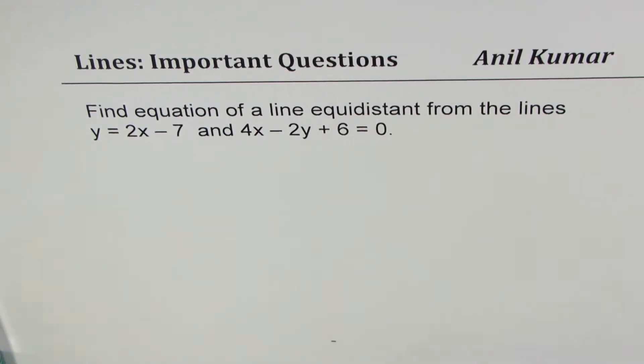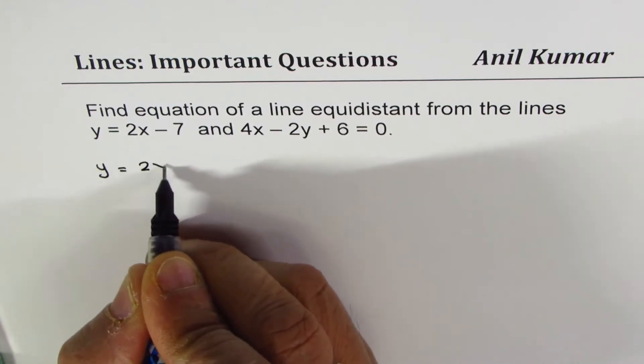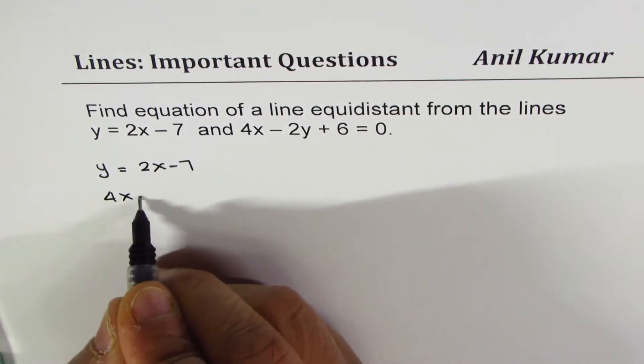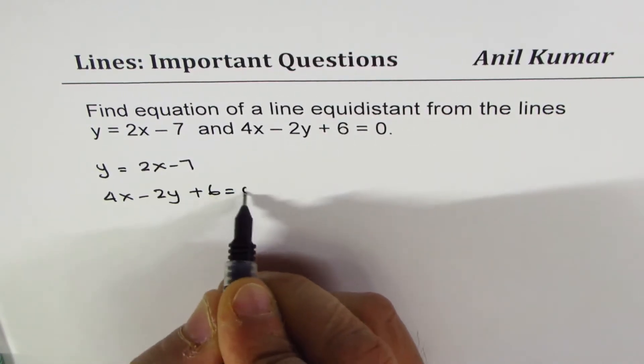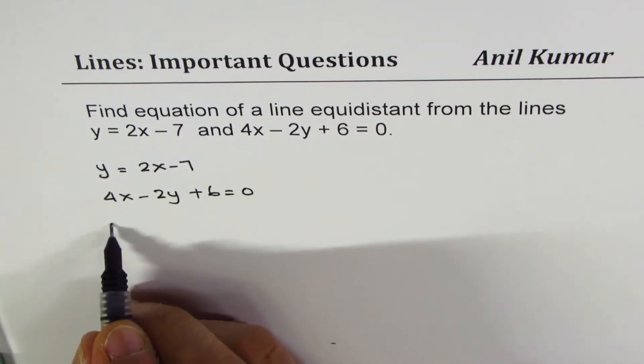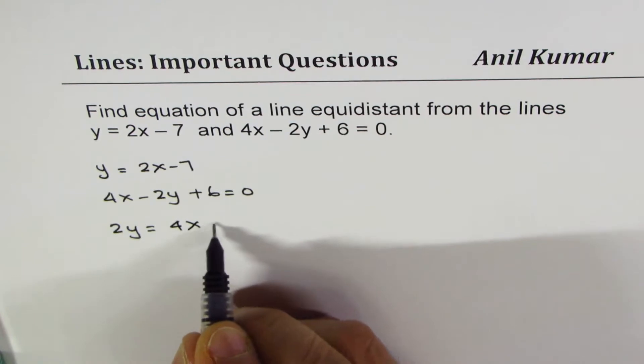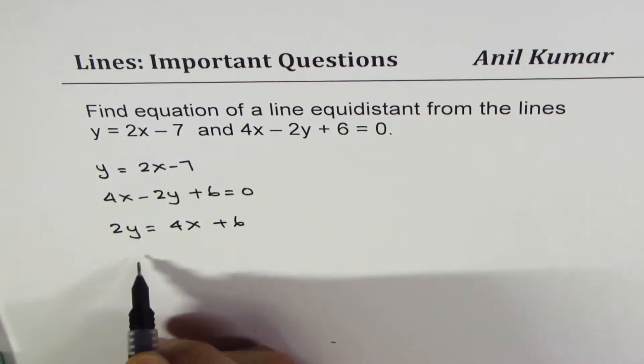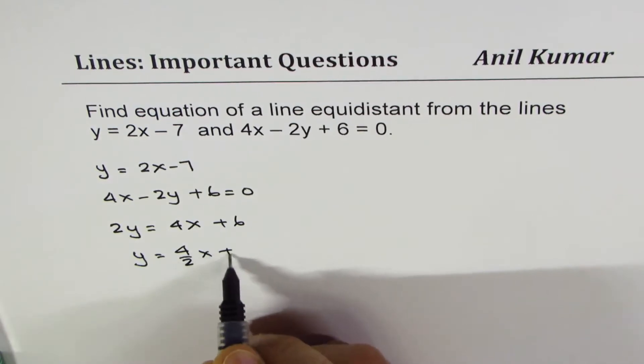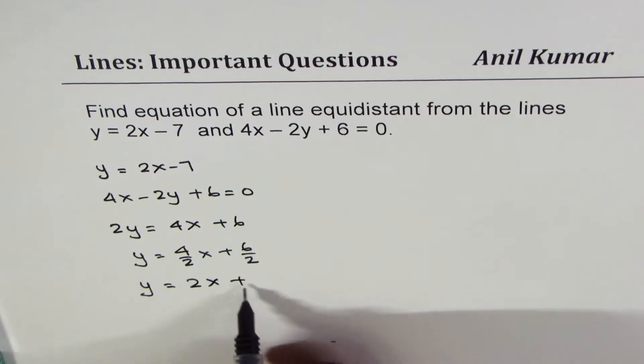So let me rewrite these equations. We have first equation as y = 2x - 7. The second one is 4x - 2y + 6 = 0. Let me rearrange this. Taking y to the other side, we get 2y = 4x + 6. Dividing by 2, we get y = 2x + 3.